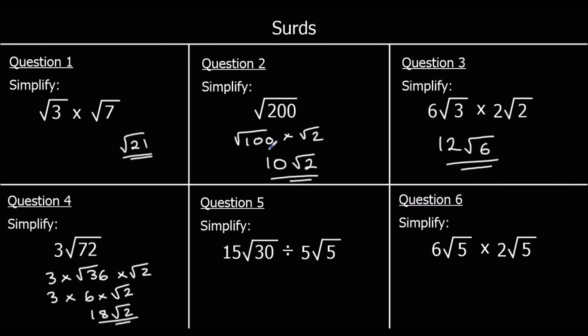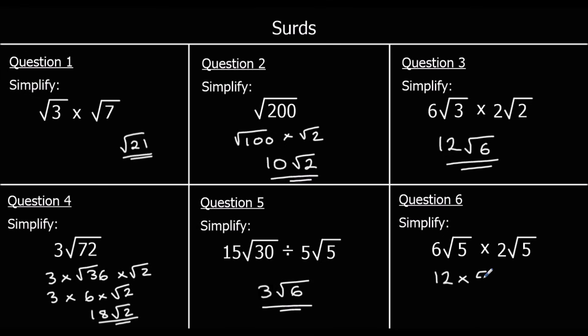Question 5: 15 root 30 divided by 5 root 5. Divide the ordinary numbers: 15 divided by 5 is 3. Then 30 divided by 5 is 6, so root 30 divided by root 5 is root 6. That gives 3 root 6. Question 6: 6 root 5 times 2 root 5. 6 times 2 is 12. And root 5 times root 5 is just 5 — that's 12 times 5, which is 60.